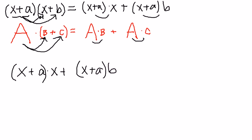Now I've got to distribute again. This time it's easier because there's only one term. x goes to x and gives me x squared, and then I have ax plus, I'm going to write the b on the left of the x. So I'll have bx, and then I'll have ab.